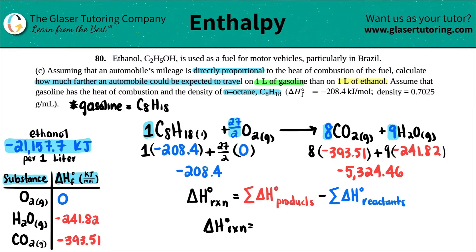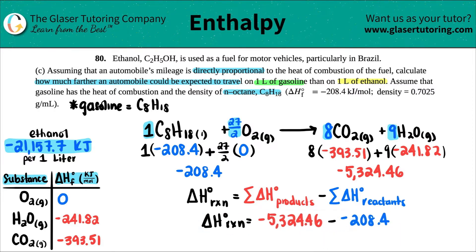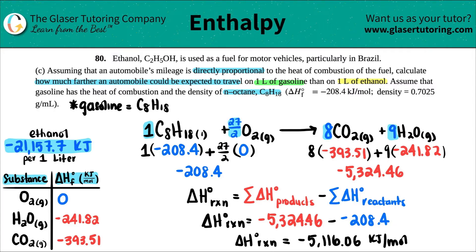Applying the formula: ΔH_rxn = -5,324.46 − (-208.4), which gives ΔH_combustion = -5,116.06 kJ/mol for C8H18.